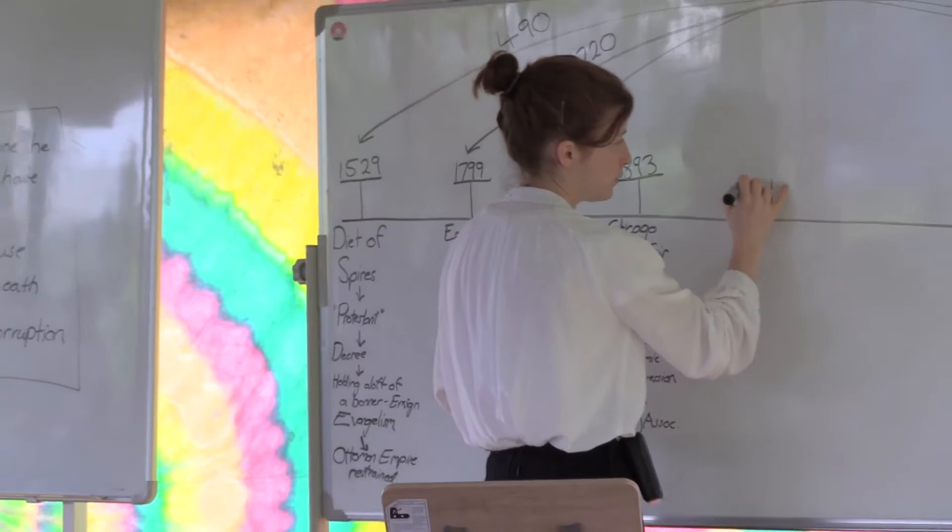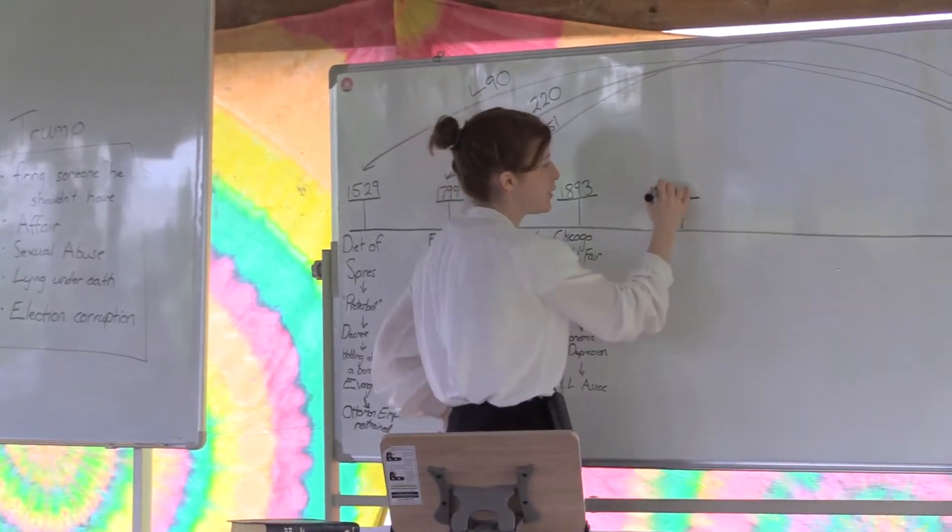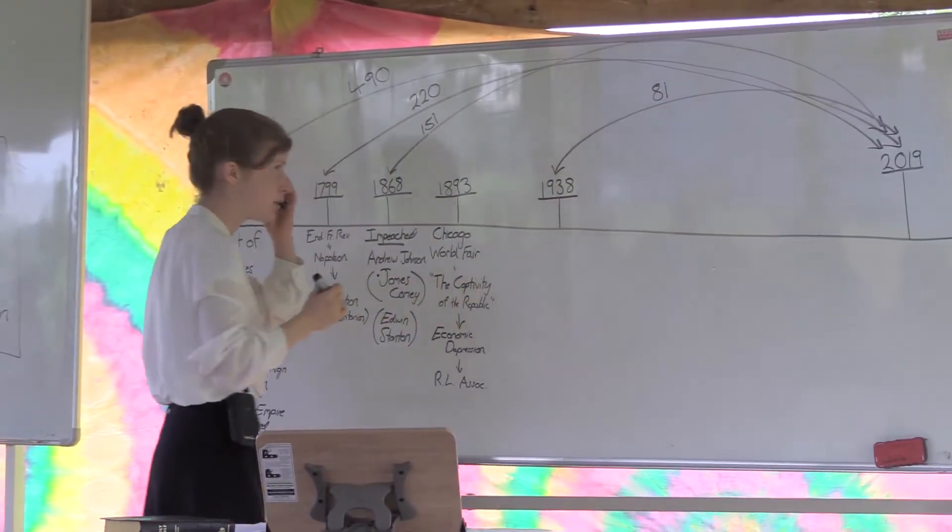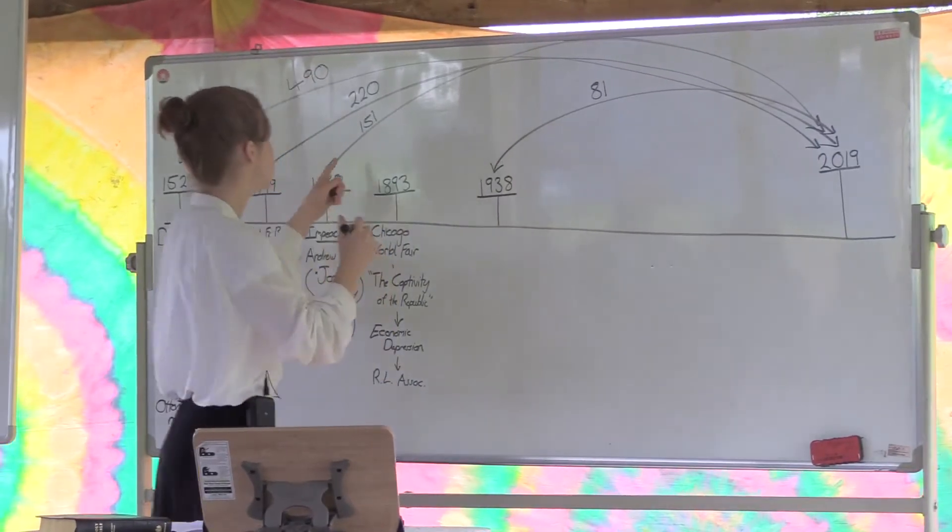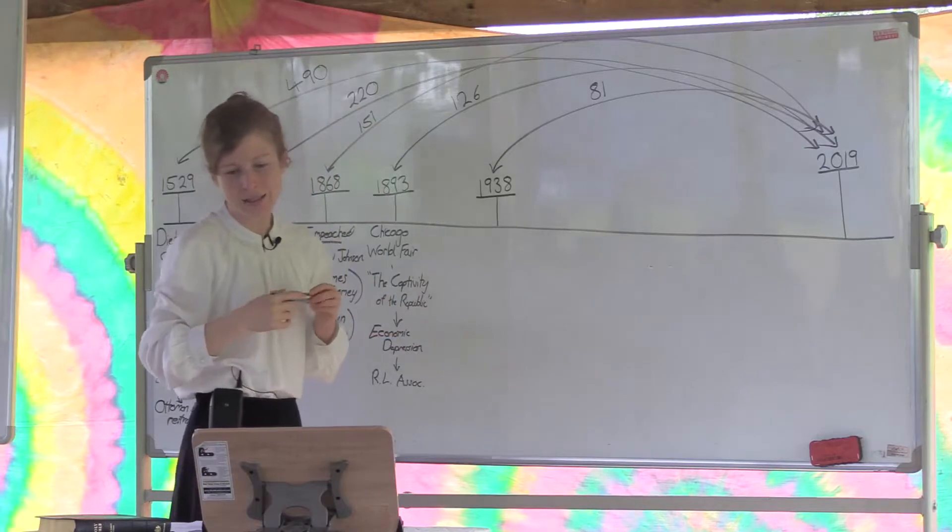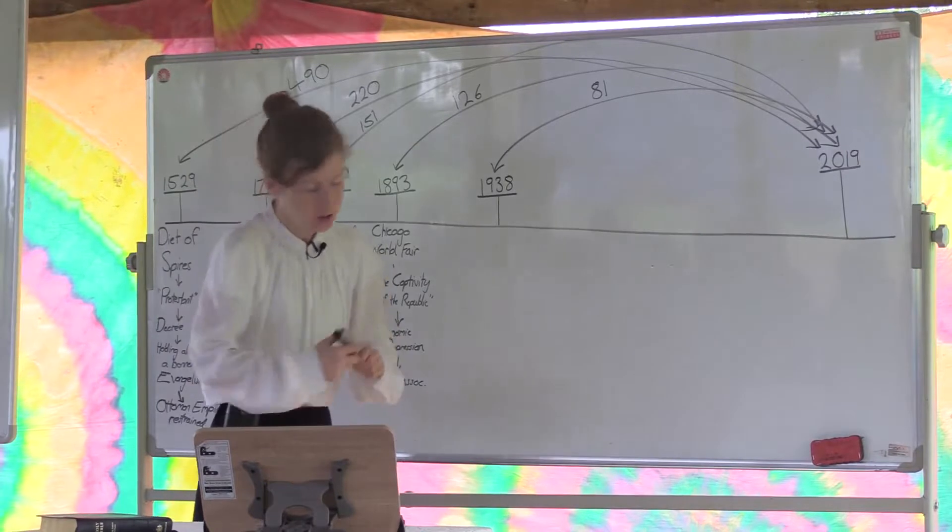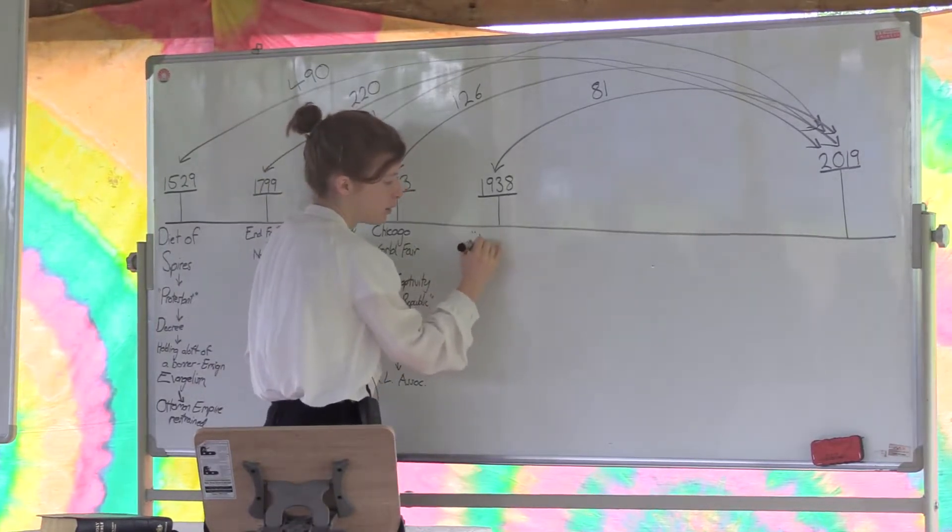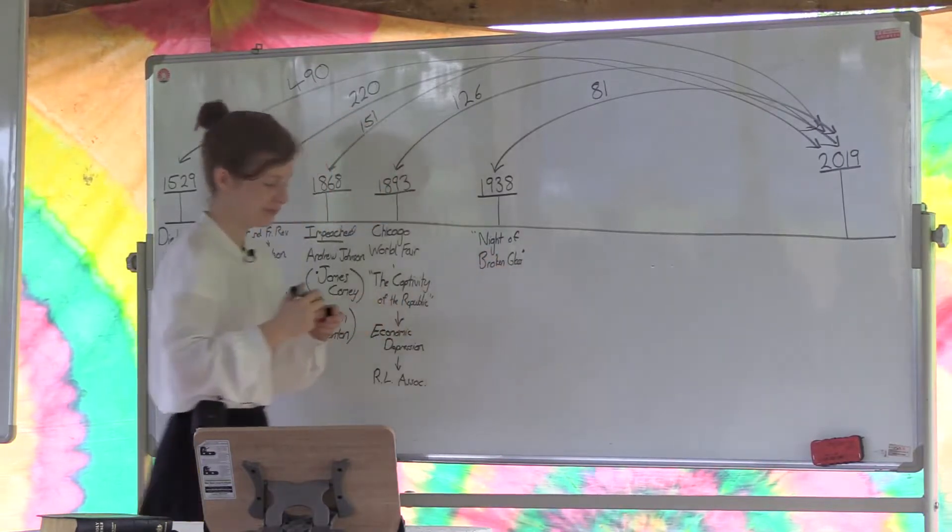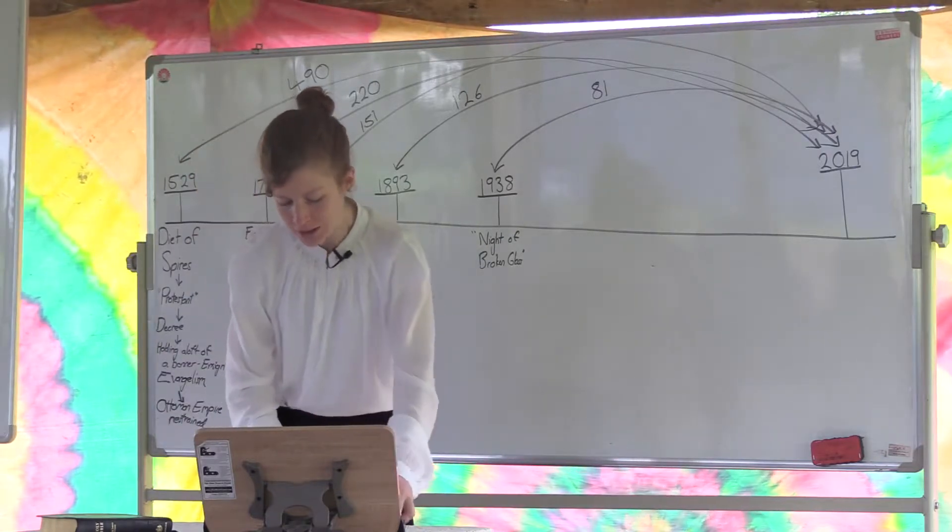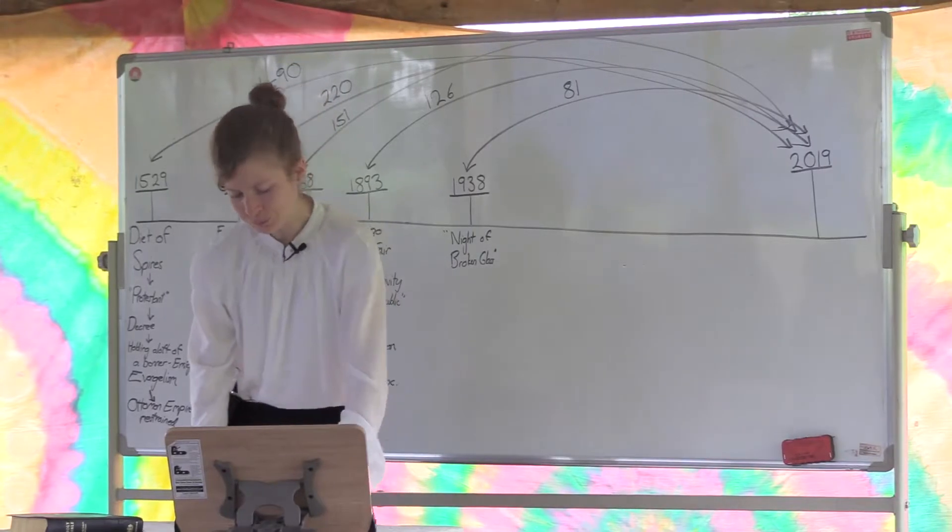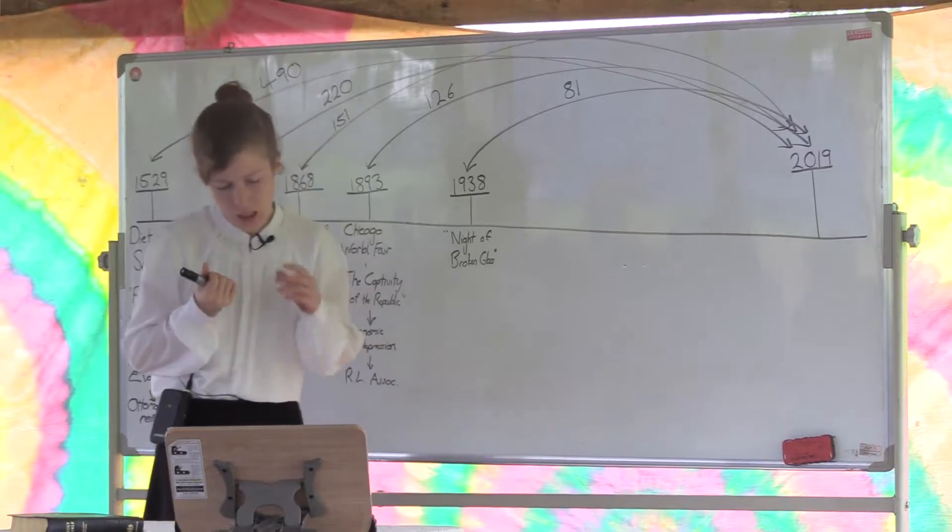The next date I want to mark is an 81. Takes us to 1938. All of these are prophetic numbers that we've been using for some time. Our 81 takes us to 1938. This is known as the night of broken glass or Kristallnacht if you're German.